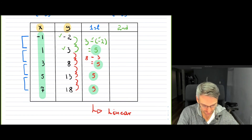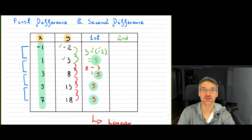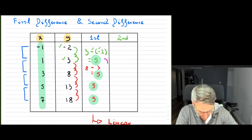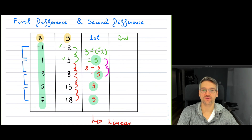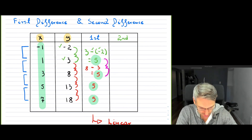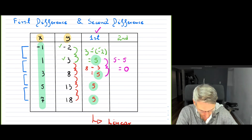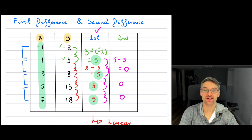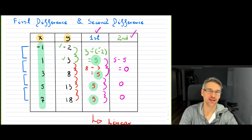What about the second difference? Students don't run into it as much, but it works exactly the same way: you take your first differences and subtract consecutive ones. Since the first difference was five all the way through, five minus five equals zero. For a linear graph, your second difference is always going to be zero — that's a nice key feature.